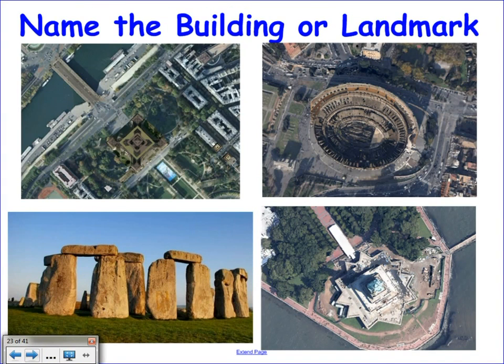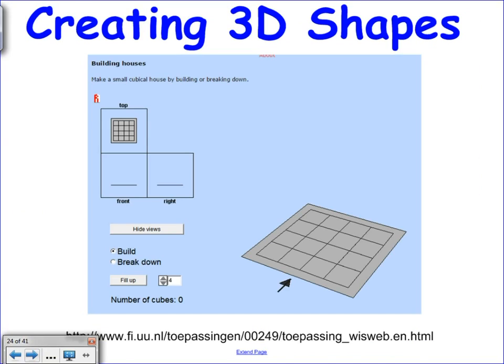So just a bit of fun. Name the buildings and the landmarks. So it's different. There's three plans and one elevation view there. Stonehenge. Easy peasy. Is it Statue of Liberty? Yes, Statue of Liberty. That's in Athens. That's the Colosseum. That's the Colosseum in Rome. Paris. Eiffel Tower. Yeah.